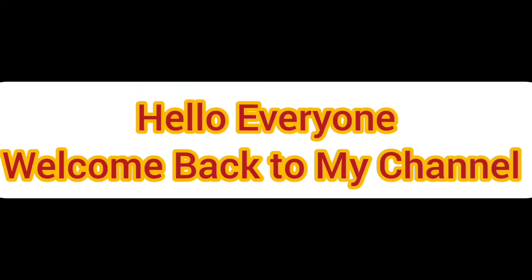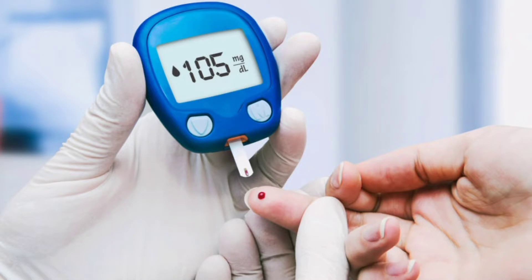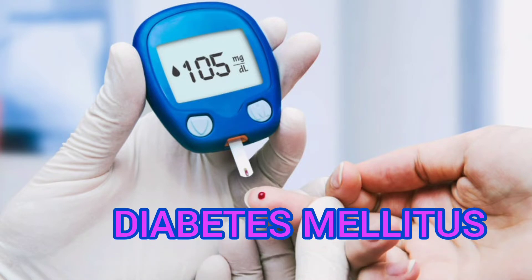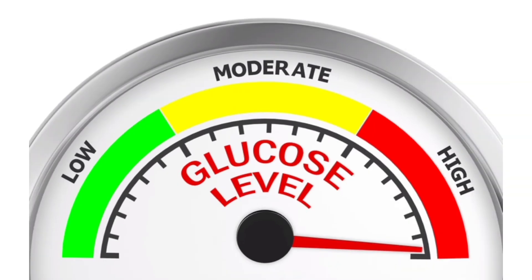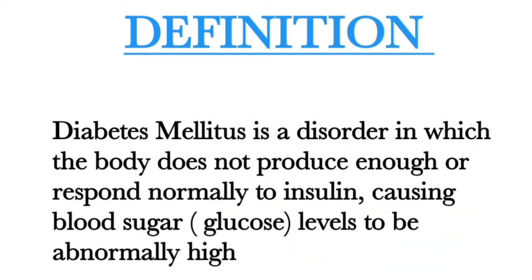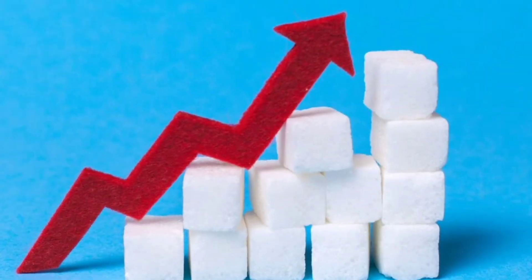Hello everyone, welcome back to my channel. Today I am going to discuss about diabetes mellitus. Diabetes means increase in glucose level in the blood. Diabetes mellitus is a disorder in which the body does not produce enough or respond normally to insulin, causing blood sugar levels to be abnormally high.